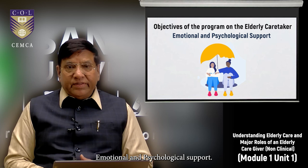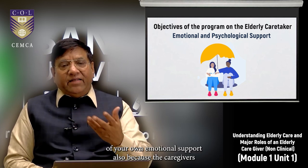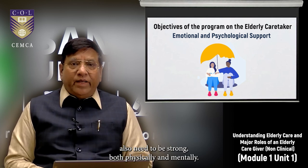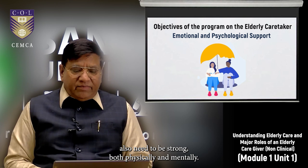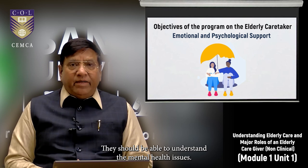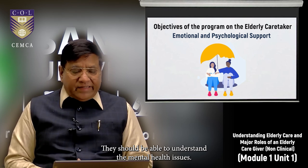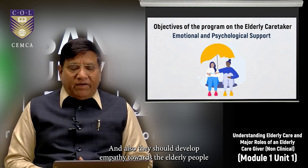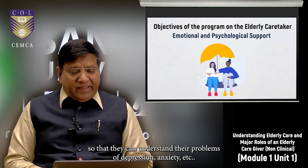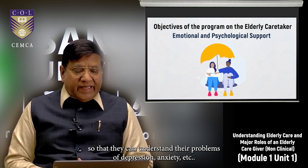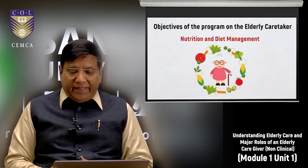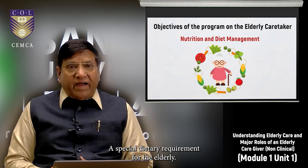Emotional and psychological support is also an objective. We have taken care of the caregivers' own emotional support as well, because caregivers need to be strong both physically and mentally. They should have active listening habits, be able to understand mental health issues, and develop empathy towards elderly people so that they can understand problems such as depression and anxiety.